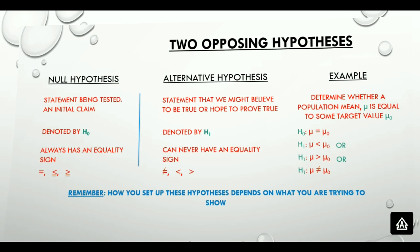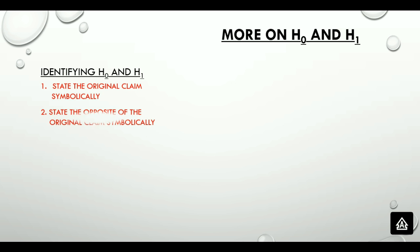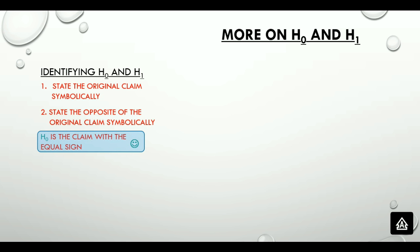Let's delve a little more into null and alternative hypotheses. Given any scenario, how do we identify H sub 0 and H sub 1? This is of utmost importance as it forms the basis of our testing. What we need to do is state the original claim symbolically, then state the opposite. Since the null hypothesis always has an equal sign, the claim with the equal sign will be H sub 0. However, in process improvement projects, we can decide H sub 0 and H sub 1 on our own. Remember, we always test the null hypothesis.